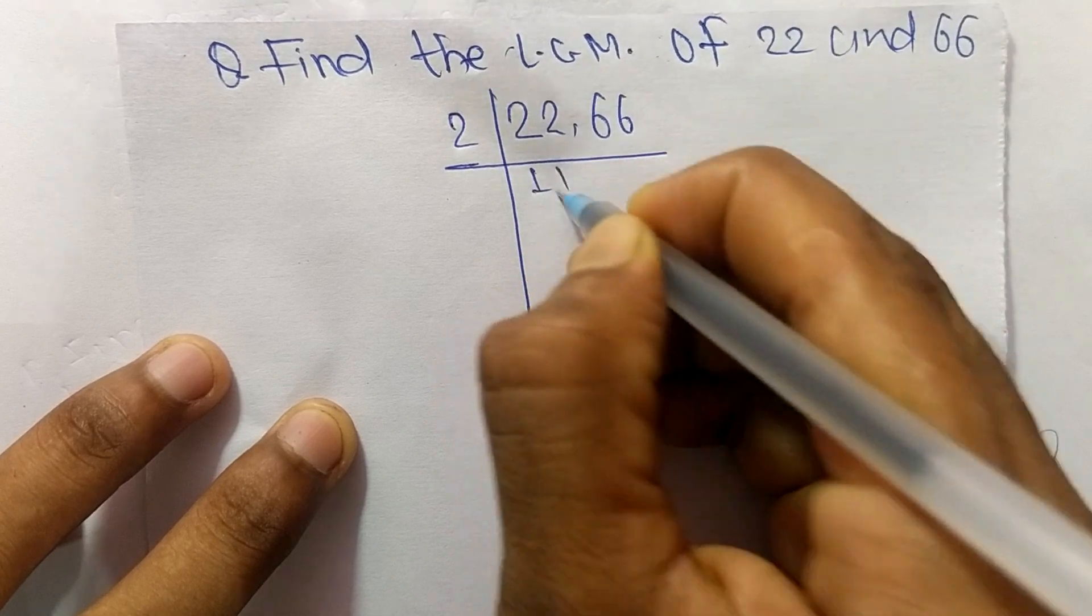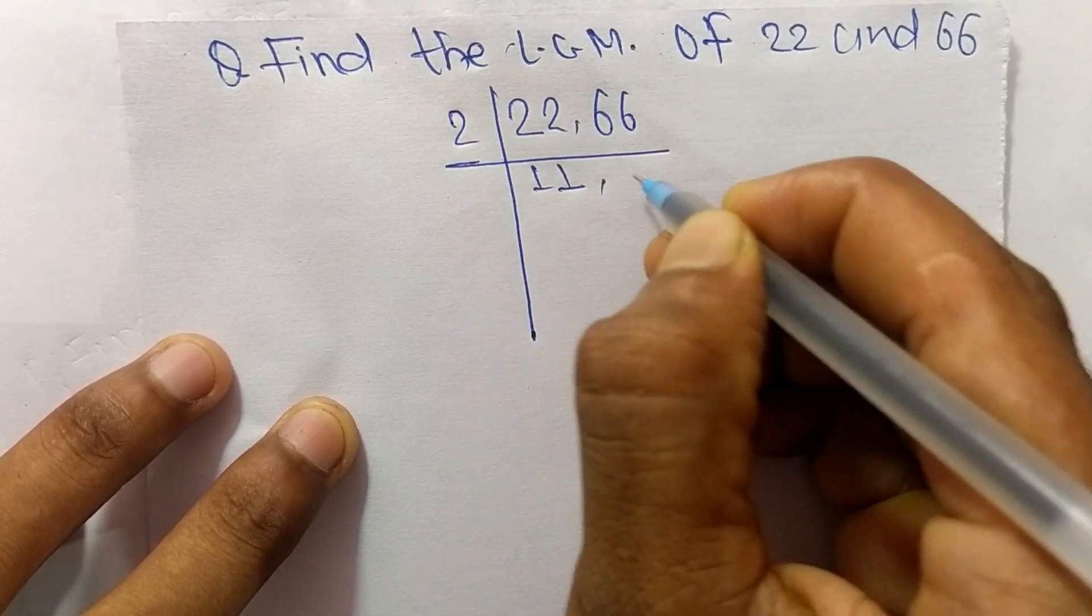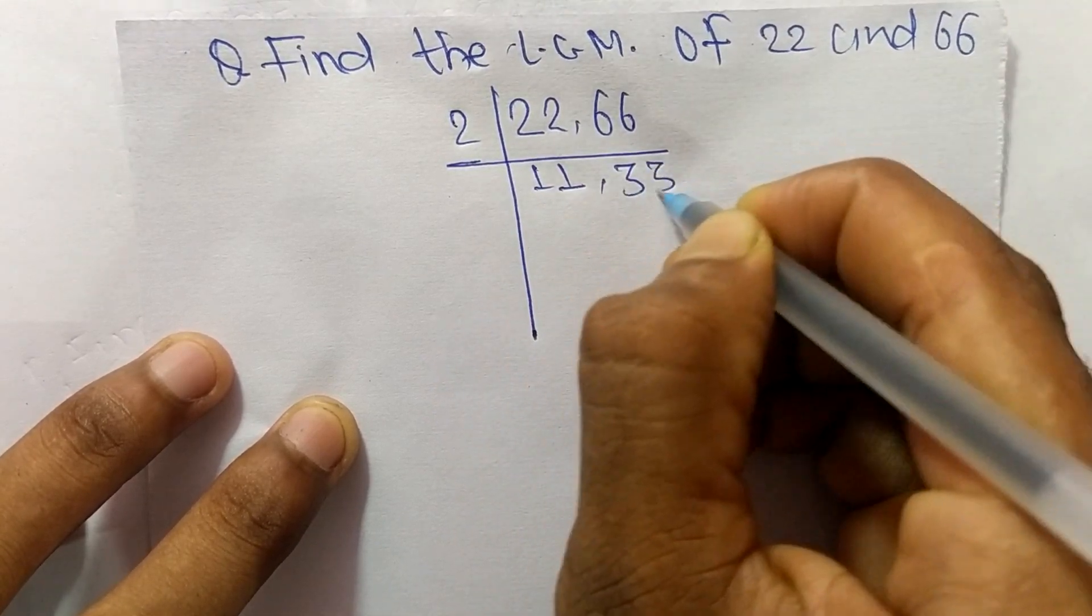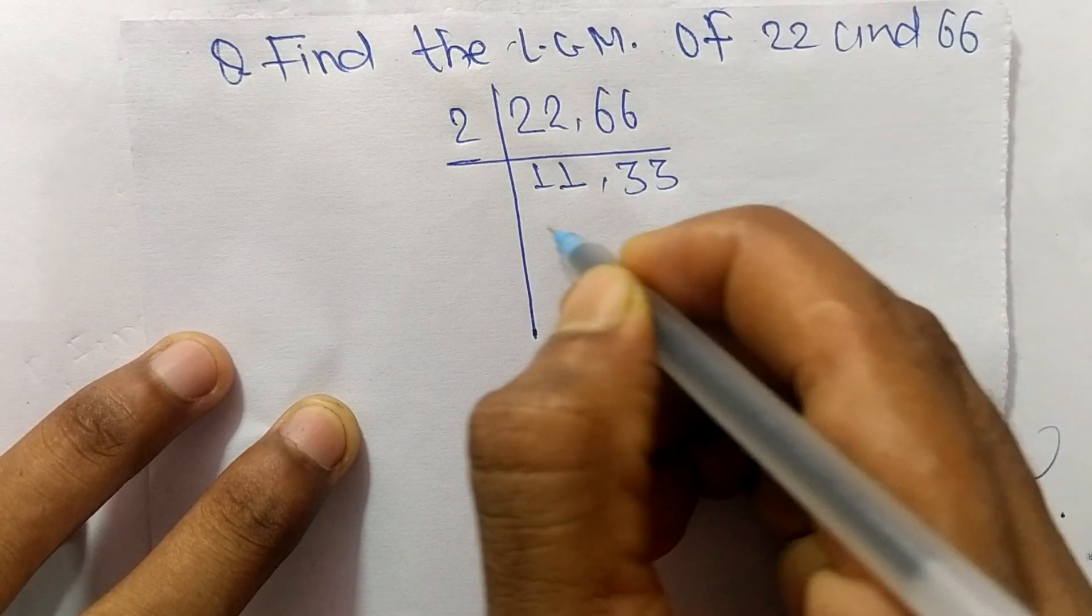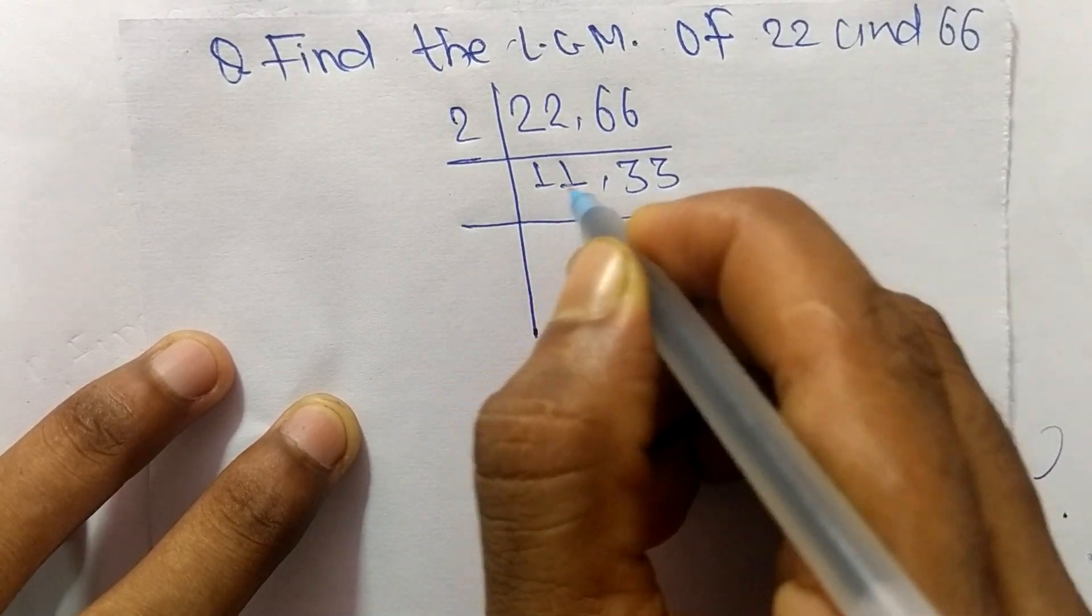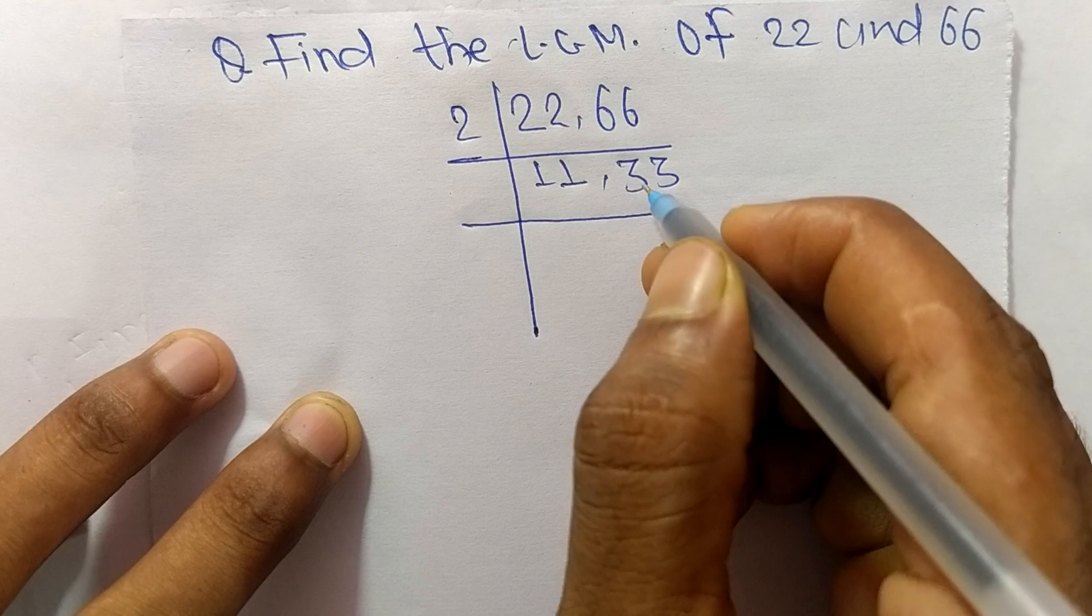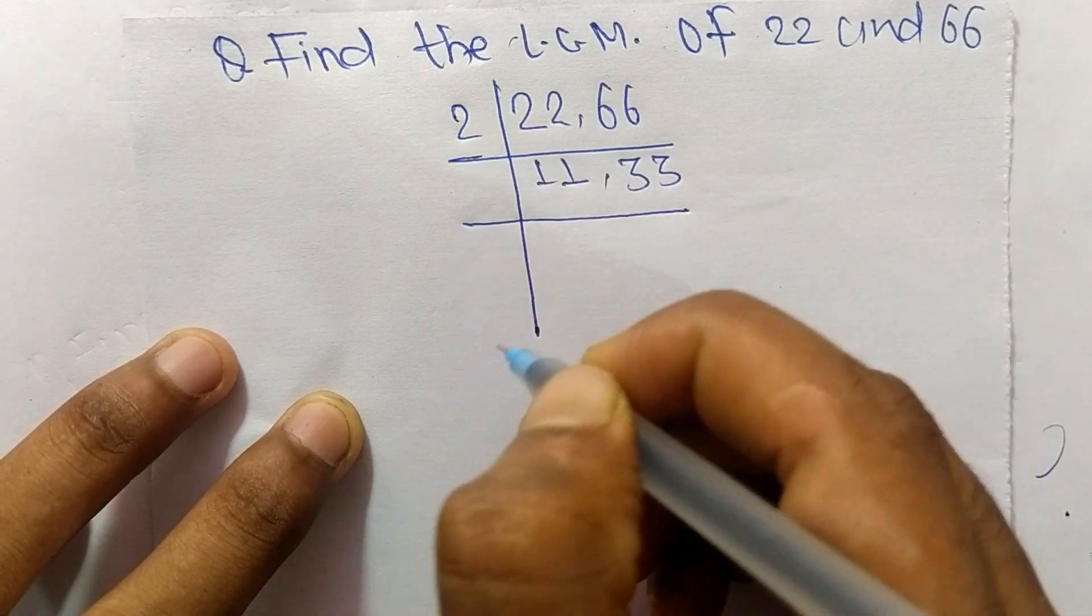2 times 11 equals 22, and 2 times 33 equals 66. Now we have numbers 11 and 33, which are not exactly divisible by 2.